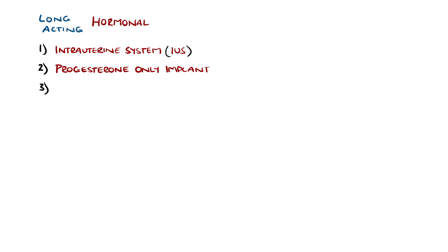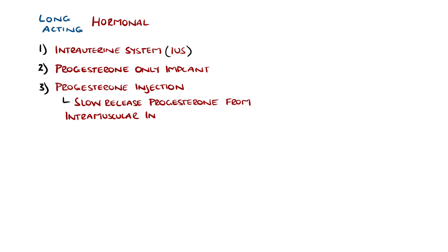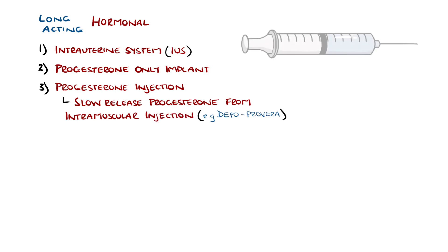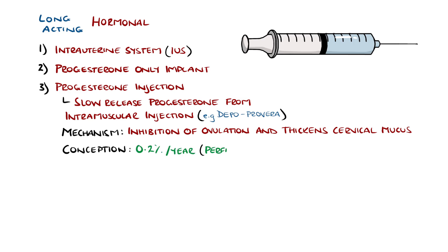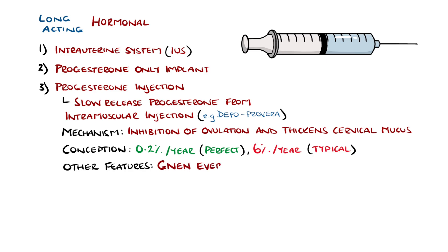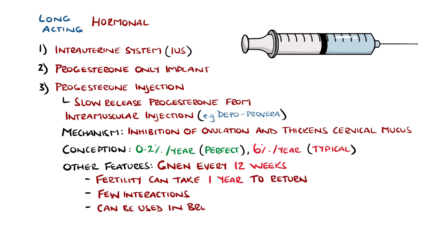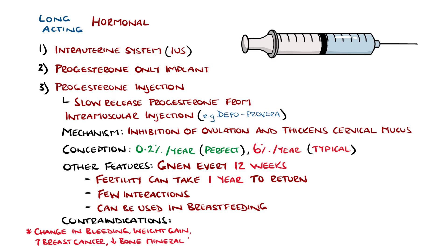The progesterone injection is another long-acting hormonal option, where progesterone is slowly released following an intramuscular injection — the most commonly used in the UK being Depo-Provera. The main mechanism of action is through inhibition of ovulation and thickening of cervical mucus. Its main advantages are that it's not user-dependent once injected, but injections need to be given roughly every 3 months. Perfect use gives a 0.2% conception rate, whilst typical use is around 6%. Fertility can take up to a year to return. It has few interactions with medication and can be an option for those with migraine or breastfeeding who cannot take the combined pill. Disadvantages include changes in bleeding pattern, weight gain, increased breast cancer risk, and a reduction in bone mineral density.